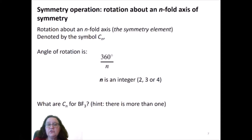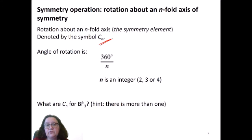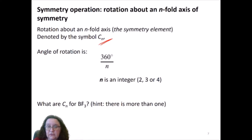Our first symmetry operation is rotation about an n-fold axis of symmetry. The n-fold axis tells us how many rotations we can have. It's denoted by the symbol Cn, where n is the number of rotations around that axis and it's an integer — two, three, four, five, six — and the angle of rotation would be 360 degrees divided by that number.